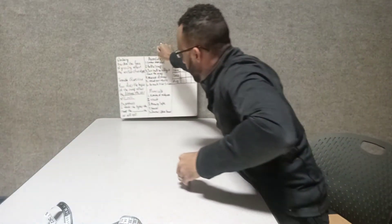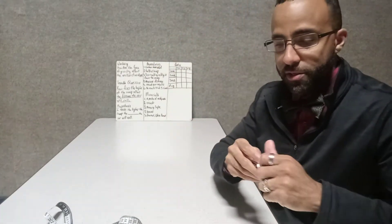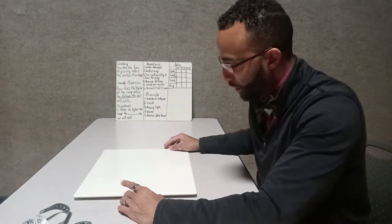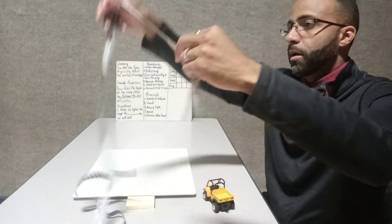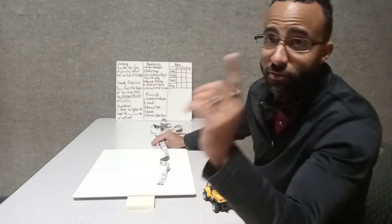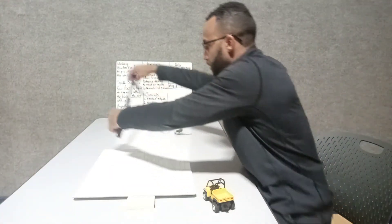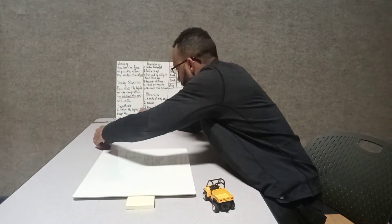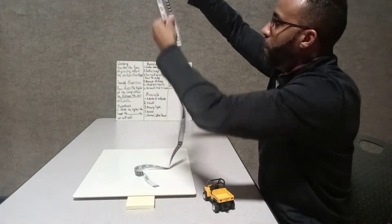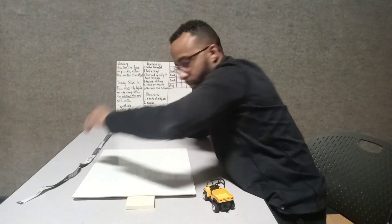I'm going to stick this right here so we can have our information right in front of our face. Got my sticky notes — we're going to start off with one sticky. Going to get our ramp, and then take our car. I'm going to roll it out. I want to use centimeters because in science we use metric — centimeters, not inches. All right, let's get ready, scholars.